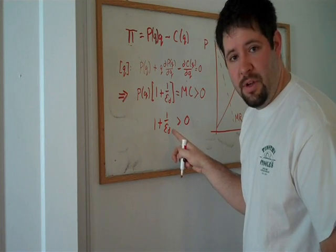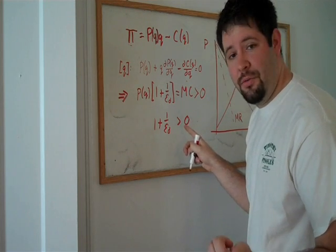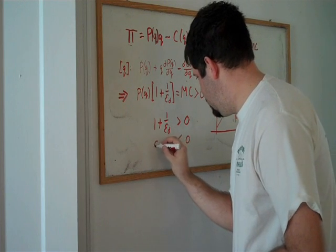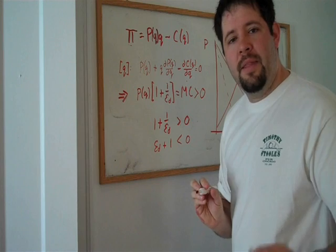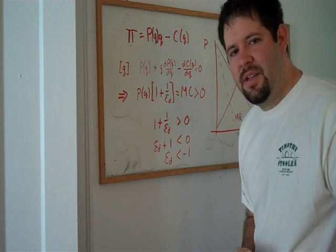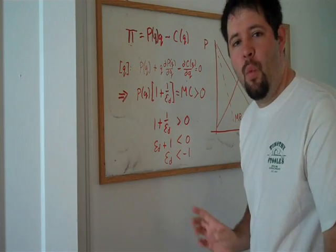And the next thing that we can do is we can just isolate this elasticity of demand. Now, if we multiply every term by the elasticity of demand, it's a negative number, so it will change the direction of the inequality. And then we can just subtract this one from both sides.